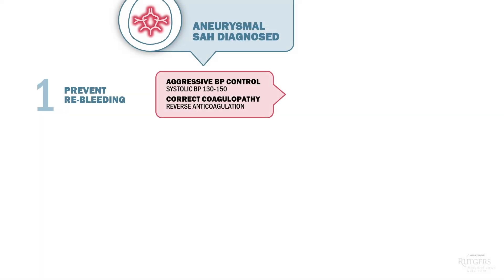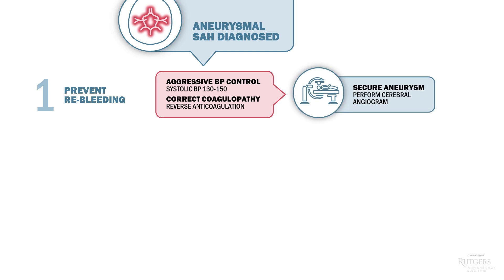The first order of business is to prevent re-bleeding by aggressively controlling the blood pressure and correcting coagulopathy, when present. Shortly thereafter, an aneurysm must be secured. That usually involves an invasive cerebral angiogram and endovascular or a surgical intervention.